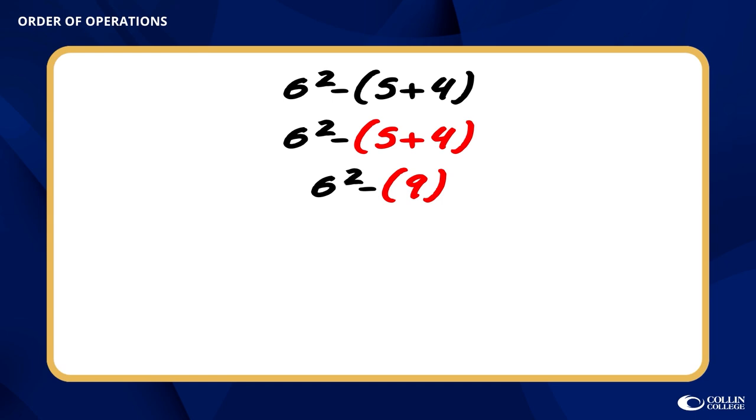Moving on to e for exponents, we see that 6 to the second power has an exponent. So that is the next step that we should do. Recall that a 2 means that there are two factors of 6 that we are multiplying together. Those factors have a product of 36, which leaves us with the second to last line of 36 minus 9. Those two values have a difference of 27.